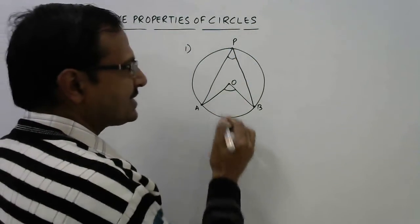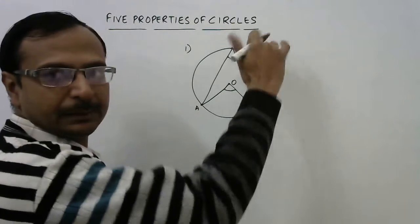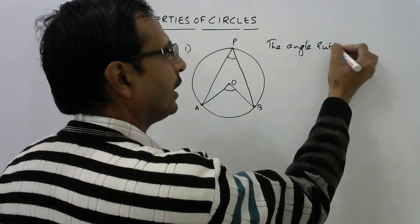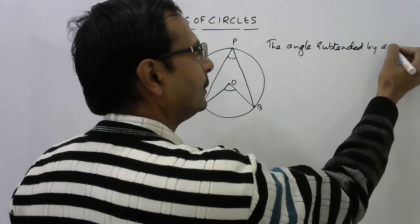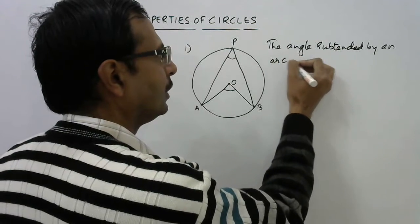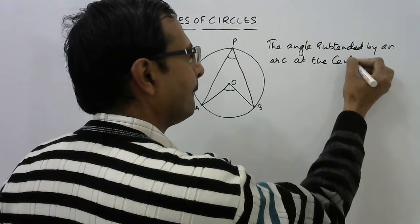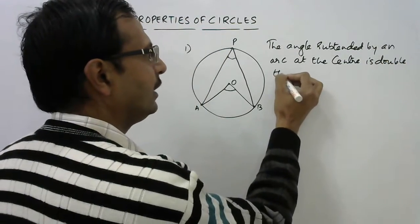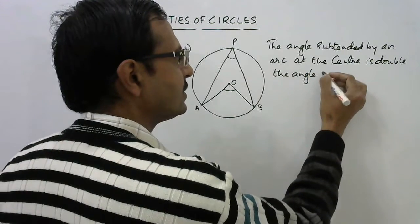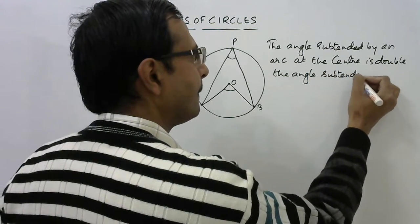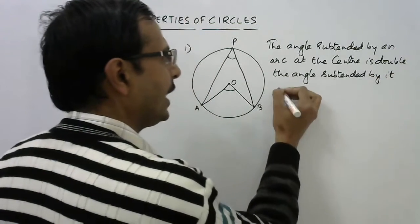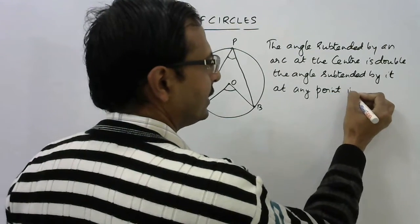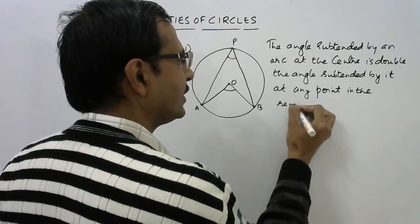So the property states that the angle subtended by an arc at the center is double the angle subtended by it at any point in the remaining part of the circle.